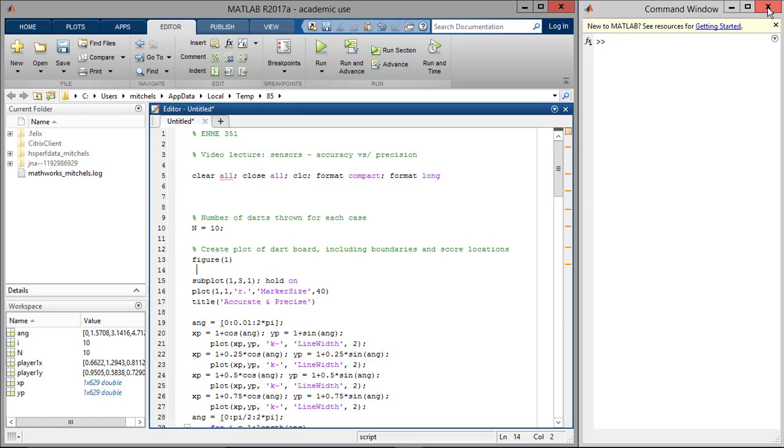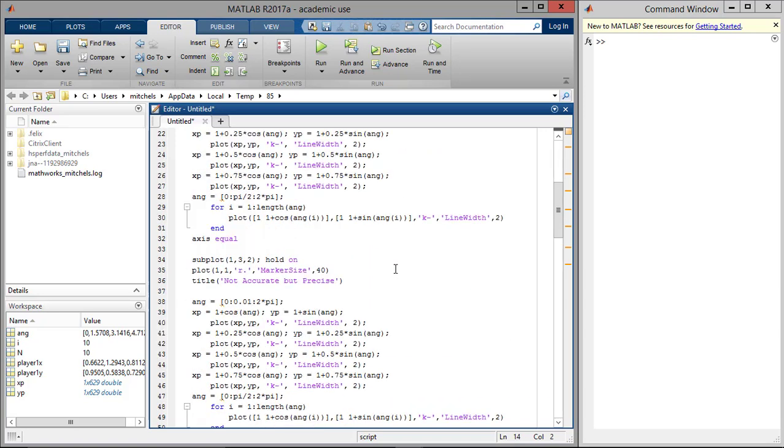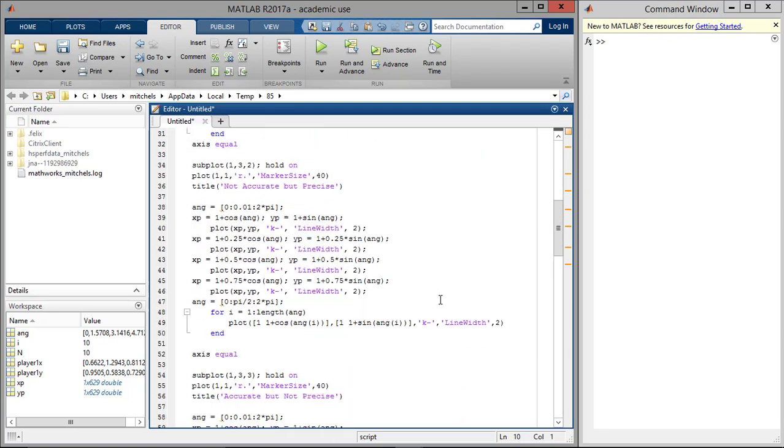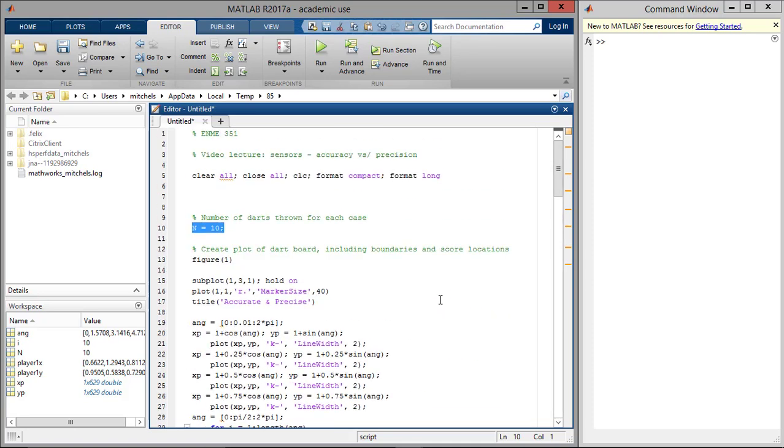So, here I am in MATLAB and I've written a chunk of code to simulate this concept of accuracy versus precision. And what we're going to do here is we're going to throw 10 darts at a dartboard with a bullseye in red. And we're going to do 10 darts for each of three different cases. So let's go ahead and run that code.